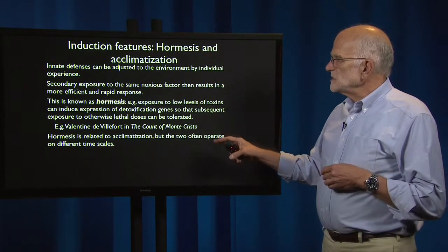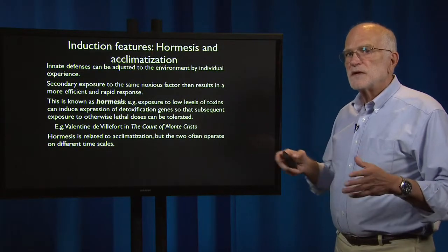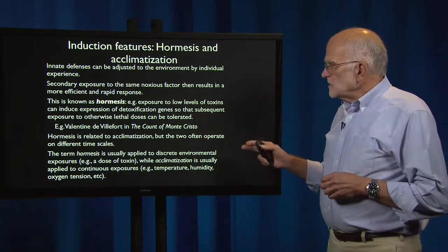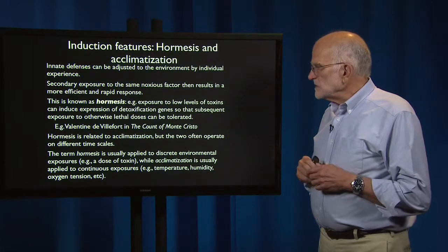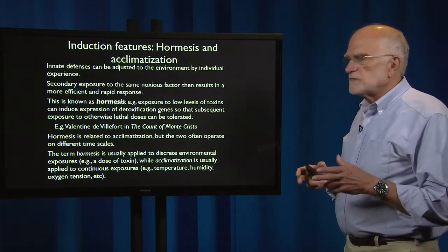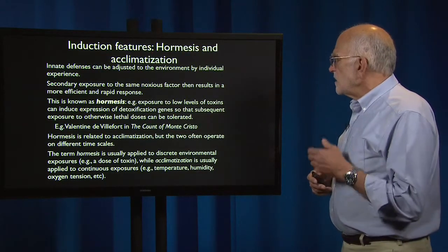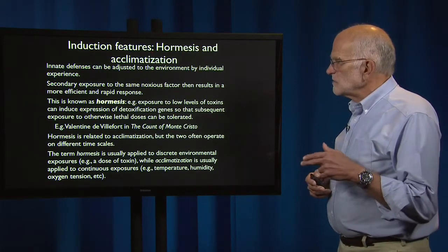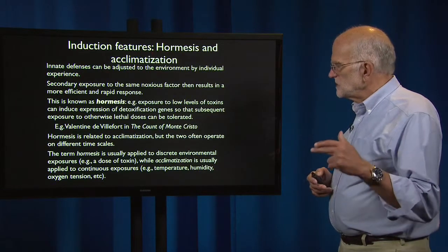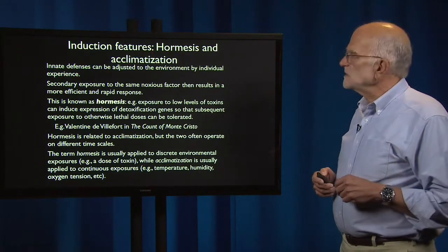Hormesis is related to acclimatization, but the two usually operate on different timescales. The term hormesis is usually applied to a discrete environmental exposure — for example, a dose of toxin — while acclimatization is usually applied to continuous exposures, for example, changes in temperature, humidity, oxygen tension, things like that.